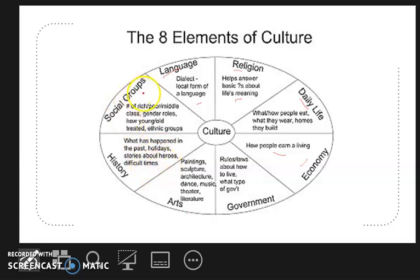Social groups: the number of rich or poor or middle class, gender roles, how young or old are treated, ethnic groups. So we have eight: language, religion, daily life, economy, government, arts, history, and social groups.